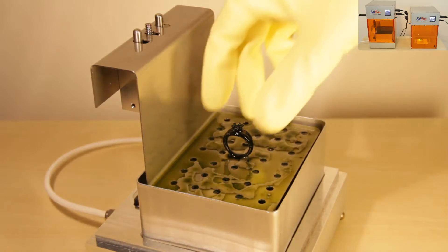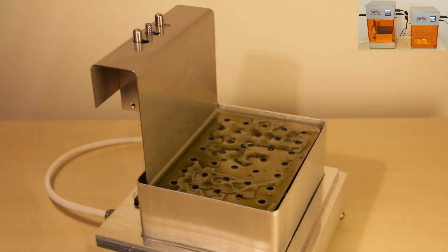Additionally, small prints are easy to remove from the build plate, since base platforms are almost never necessary. Finally, progress is a lot easier to watch on the Sapphire than on bottom-up printers, and problems can be more quickly identified.